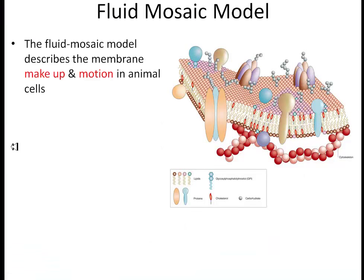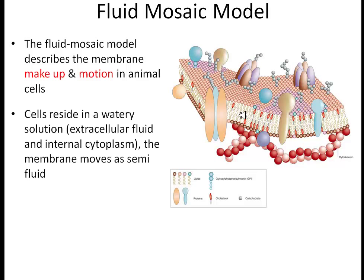The fluid mosaic model describes the motion — it's the makeup and motion of animal cells primarily. Plant cells have a cell wall on the outside which limits some of the motion. Cells reside in a very watery solution, both extracellular and intracellular. There's a cytoskeleton on the inside — fibers or microfibers that help keep the cell's shape.